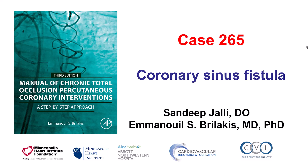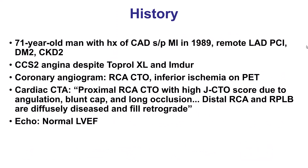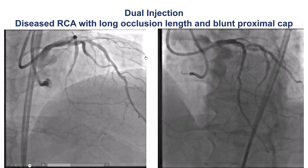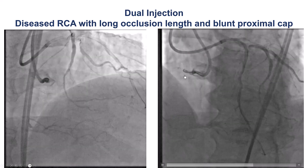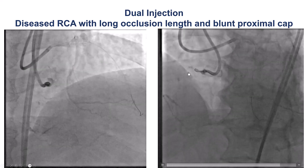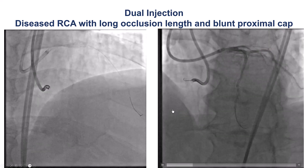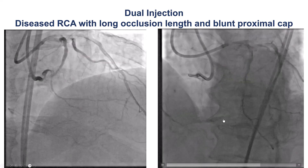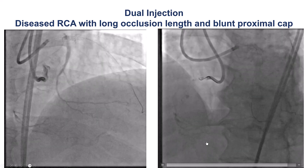This is a case of a coronary sinus fistula created during CTO PCI. The patient was a gentleman who presented with angina despite medical therapy and was found to have a right coronary artery CTO and inferior ischemia. He was referred for PCI of the right coronary artery CTO, which had a blunt proximal cap, was relatively long length with a distal vessel at the bifurcation of the distal RCA and a large acute marginal branch that was filling through small collaterals, mainly epicardial from the left.